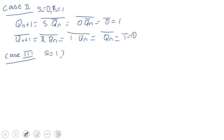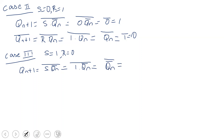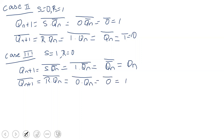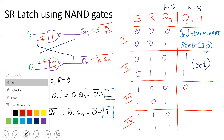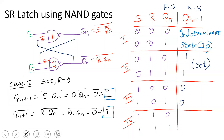Case 3: S=1, R=0. QN+1 = (1·QN_bar) bar = QN_bar bar = QN. QN+1_bar = (0·QN) bar = 0 bar = 1. QN+1 = QN and QN+1_bar = 1 — this satisfies the complement condition. When S=1 and R=0, the device is reset, so QN+1 = 0.